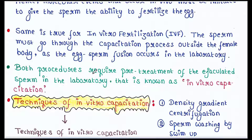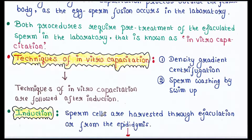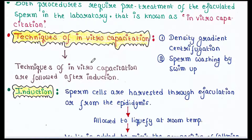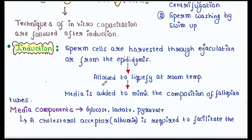The same is true for in vitro fertilization (IVF) — the sperm must go through the in vitro capacitation process outside the female body, as egg-sperm fusion occurs in the laboratory. Both IVF and IUI require pre-treatment of ejaculated sperm in the laboratory, known as in vitro capacitation. There are two main techniques: density gradient centrifugation and sperm washing by swim-up. These techniques are followed after induction, which is very important.